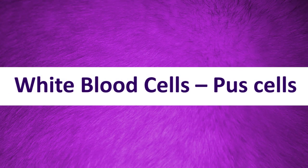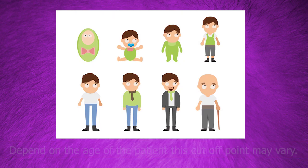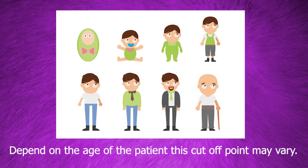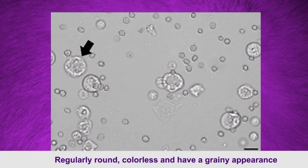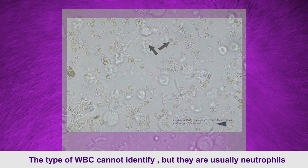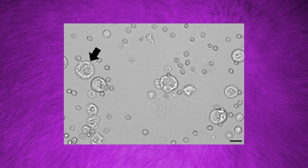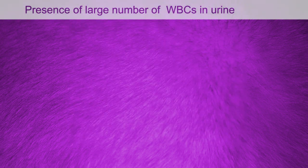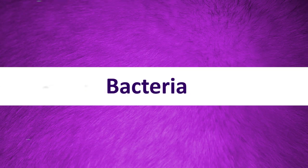Tumors can also be a cause; however, blood in the urine from menstrual contamination should not be considered abnormal. White blood cells or pus cells: presence of more than five white blood cells per high power field is considered abnormal, and this is also very dependent on age. White blood cells are usually 1.5 to 2 times larger than red blood cells. They are regularly round, colorless, and have a grainy appearance. The specific type of white blood cell cannot be identified, but they are usually neutrophils.